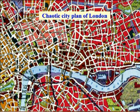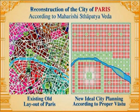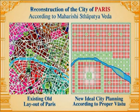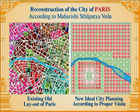Similarly, we can look at the reconstruction of the city of Paris. On one side we see the existing old layout with its chaotic road pattern, and on the other we see the new ideal city planning with all roads properly laid out, avoiding inauspicious areas. Paris is also bisected by a river; the auspicious side should hold the main administration and city center, while a large area along the inauspicious side should remain as parks and gardens. The Louvre is very inauspiciously placed, and the kings were never happy there — which is why they moved out to Versailles.